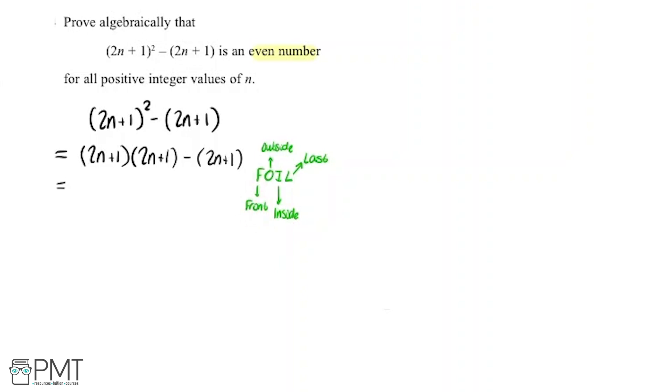So we start with front. So we multiply together both of the starting elements. So we're going to have 2n multiplied by 2n. I'm going to add on to that. So now I'm going to do outside. So here we're going to do the front element and the last element here, the outside elements. So we've got 2n multiplied by 1.